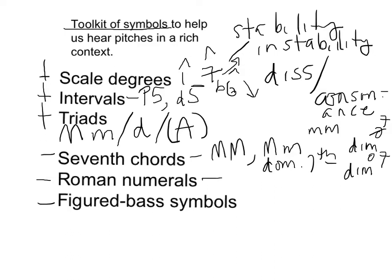Roman numerals tell us where these kinds of sonorities occur in a key. So there's a major triad on one that sounds extremely stable. There's also a major triad on four that doesn't sound quite as stable because it has scale degrees in it other than one, three, and five.